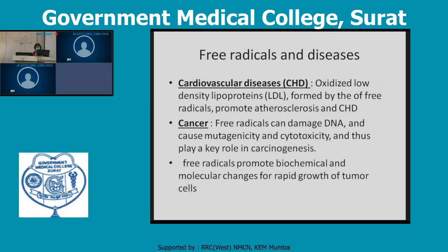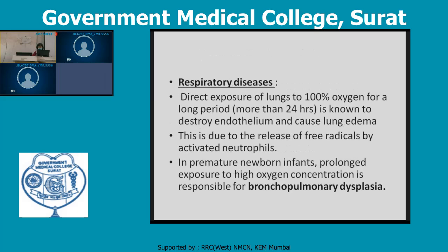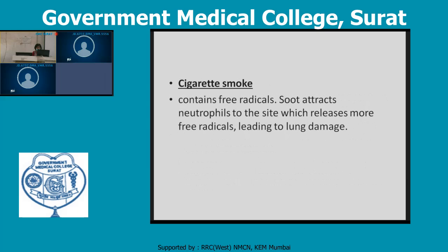In cancer, free radical damage to DNA causes mutagenicity and cytotoxicity, and promotes the biochemical and molecular changes for rapid tumor growth. In respiratory disease, if the lung is exposed to 100% oxygen for more than 24 hours, it leads to damage of the endothelium and lung edema. In premature newborn infants, prolonged exposure to high oxygen concentration is responsible for bronchopulmonary dysplasia. Cigarette smoke attracts neutrophils to the site, which release more free radicals, leading to lung damage.